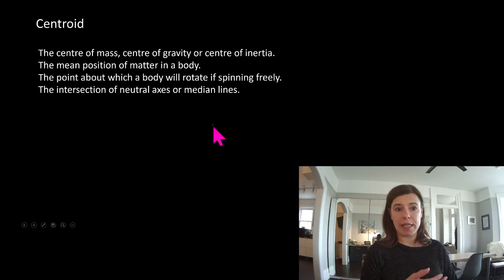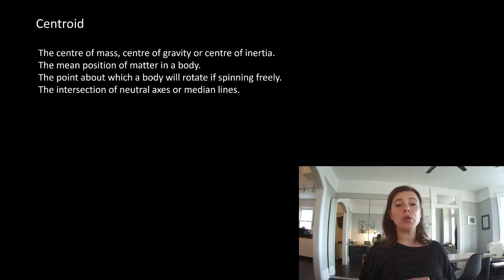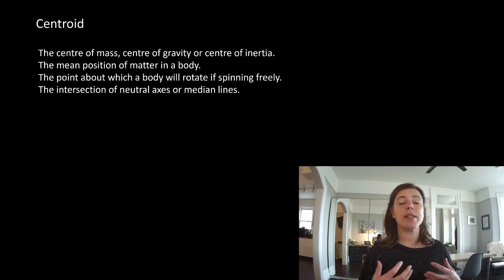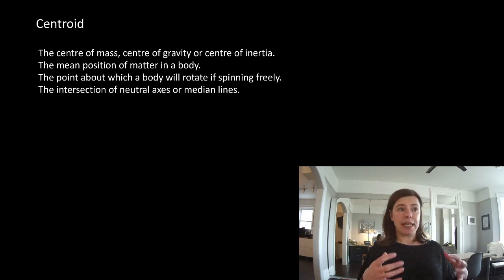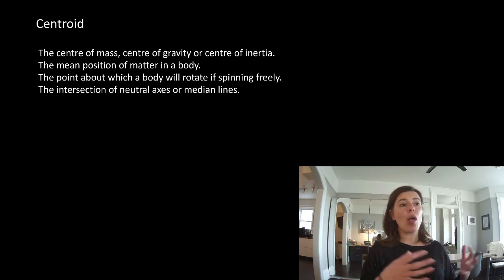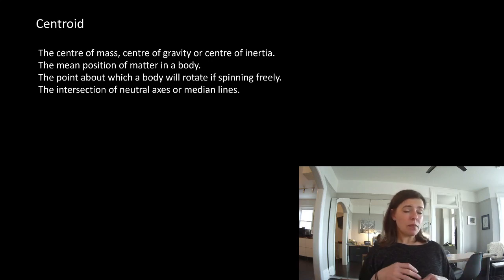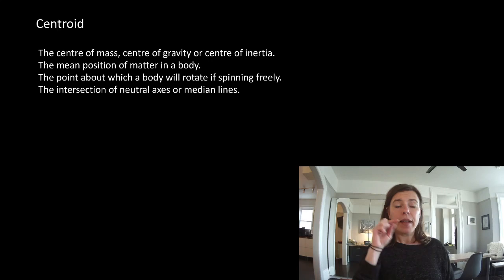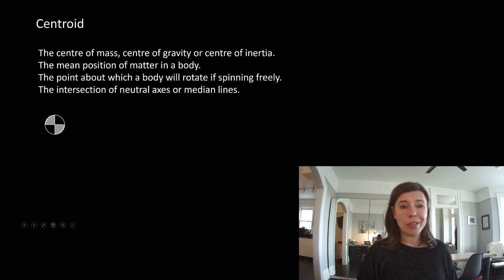Before we talk about what a moment is, a few vocabulary words will help. The first is centroid. Intuitively, most of you understand it — it can be the center of mass, center of gravity, or center of inertia. Essentially, it is the mean position of matter in a body, or the point about which a body will rotate if spinning freely. It is the intersection of all the neutral axes or median lines. We'll often draw a special symbol to represent the centroid.